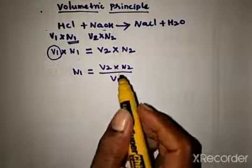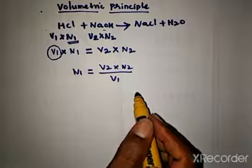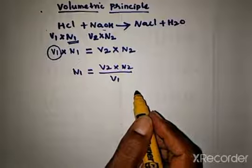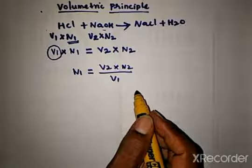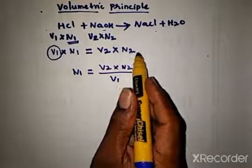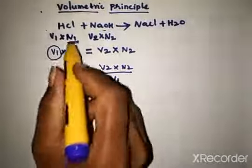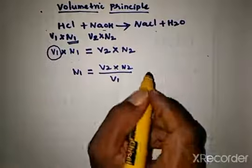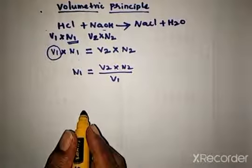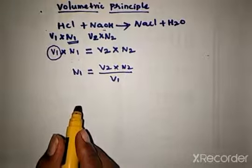Therefore, the volumetric principle states that the product of volume and normality of one solution taken in the titration is equal to the product of volume and normality of another solution taken in the titration. Now we know what the volumetric principle is, so we shall see some of the basic requirements of titrimetric reactions in volumetric analysis.